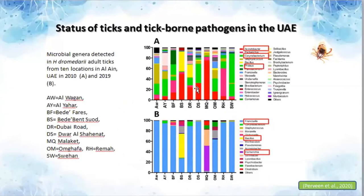For tick microbiome studies, we compared the microbiome between two time periods: 2019 and 2010. In 2010, our lab was working on ticks, and I found stored tick samples in the freezer. We thought we should compare the tick microbiome across two time periods. We found that Francisella was the most abundant genus in the 2019 samples, whereas in the 2010 samples, Acinetobacter, Corynebacterium, and Proteus were the abundant genera.